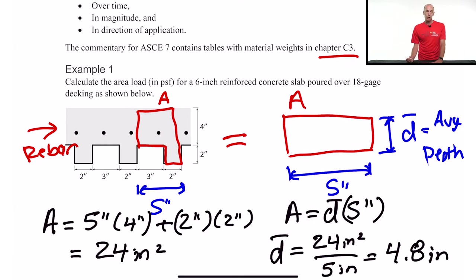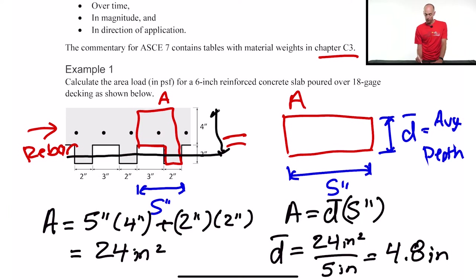D-bar equals 24 square inches over five inches, which turns out to be 4.8 inches — that's the average depth. You want to make sure this looks reasonable. If it were five inches, that would be right at the center of the decking. It's a little bit less than that, and that makes sense because there is less material than gap, so you'd expect the average depth to be a little above the midpoint.